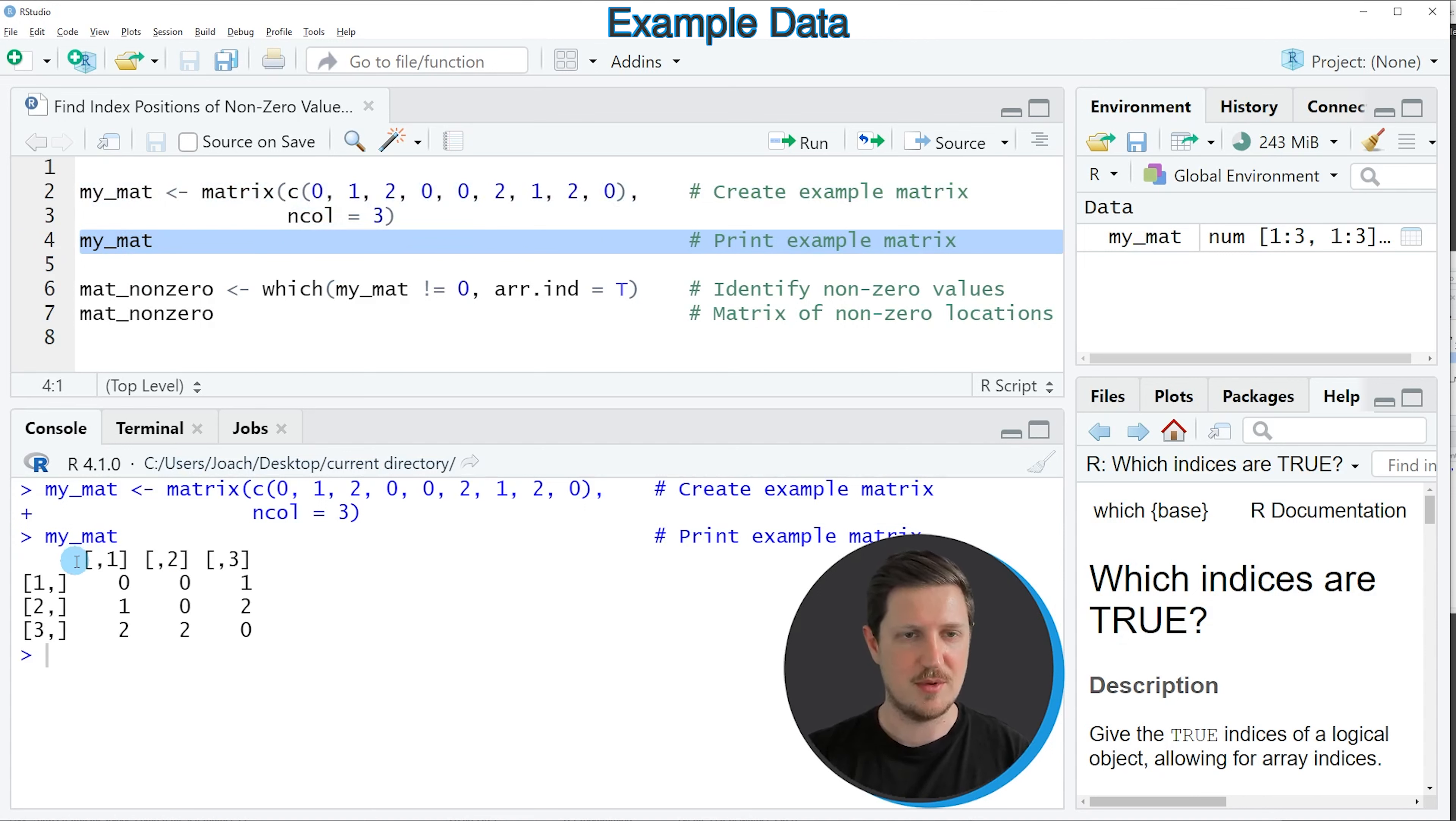And then you can see at the bottom that we have created a matrix containing 3 rows and 3 columns. Some of the values in this matrix are equal to 0 and other values are unequal to 0.